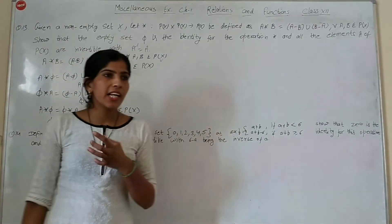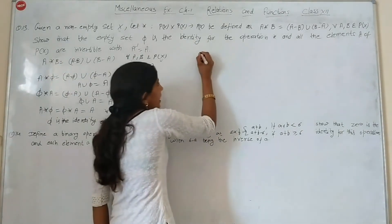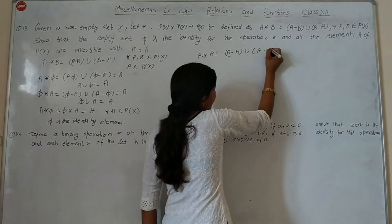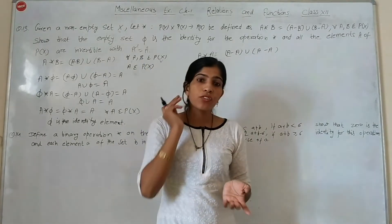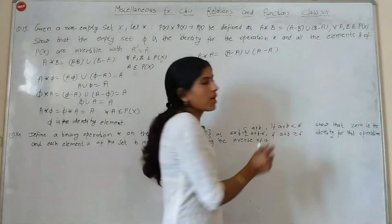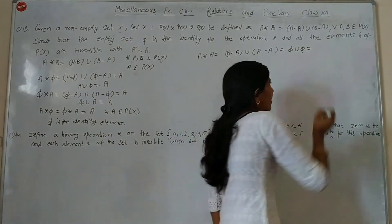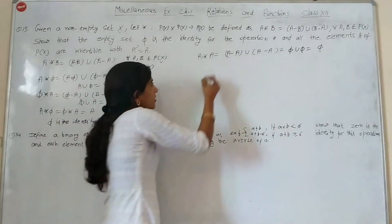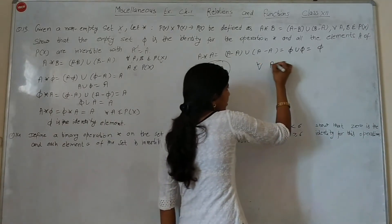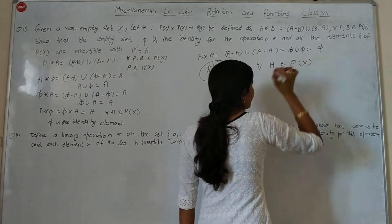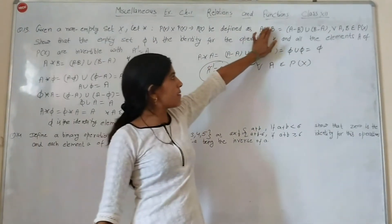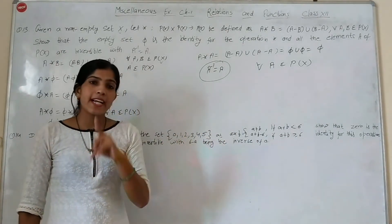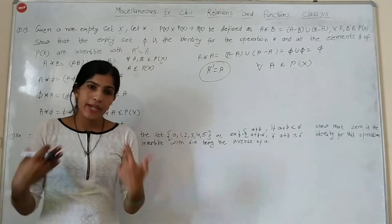For inverse, take A star A: that is (A minus A) union (A minus A), which equals Phi union Phi equals Phi. Since Phi is the identity element, and A star A equals Phi, therefore A inverse equals A, for all A belonging to P(X).